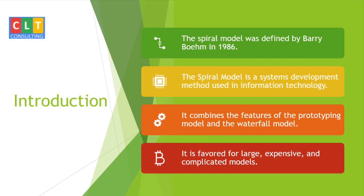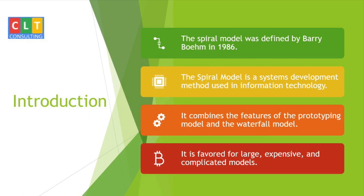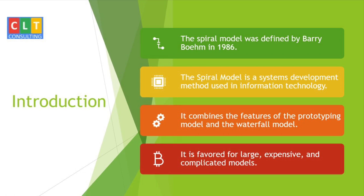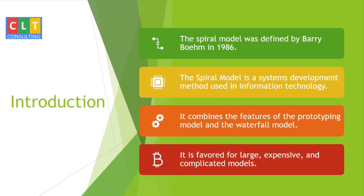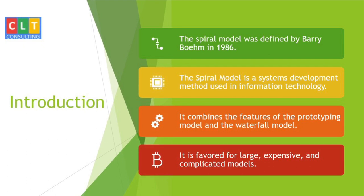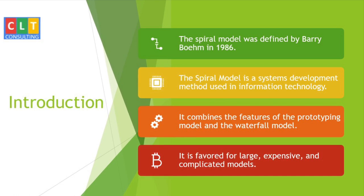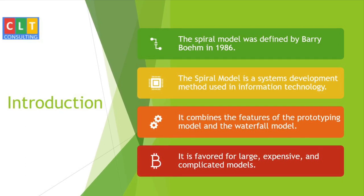In the Waterfall Model, the whole process of software development is divided into separate phases. The outcome of one phase acts as the input for the next phase sequentially — meaning any phase begins only if the previous phase is complete. Phases flow steadily downwards like a waterfall, which is why it is called the Waterfall Model. The Spiral Model is used in large, expensive, and complicated projects.